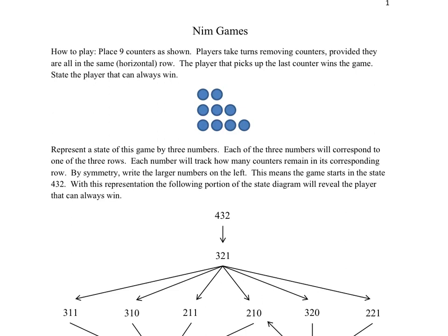So nine counters are shown. The players take turns removing counters, provided that the counters are all in the same horizontal row. So if you look up the game of Nim, sometimes people describe this game in piles or heaps. The way that we're going to do that idea in this lecture is to have horizontal rows. So one pile is this horizontal row, the next pile is that horizontal row, and the final pile is the third horizontal row. So the player that picks up the last counter wins the game.